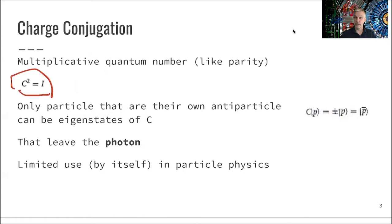Only particles that are their own antiparticles can be eigenstates of this symmetry. You can see this here. When you apply this, you either get a positive or negative sign. But this is only valid for particles which are their own antiparticles.